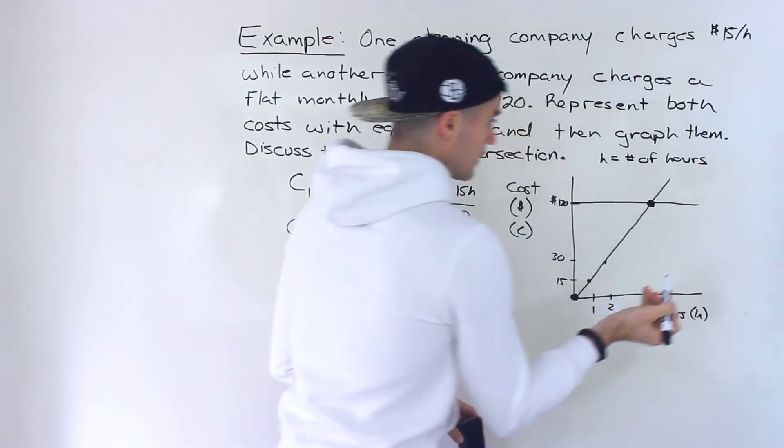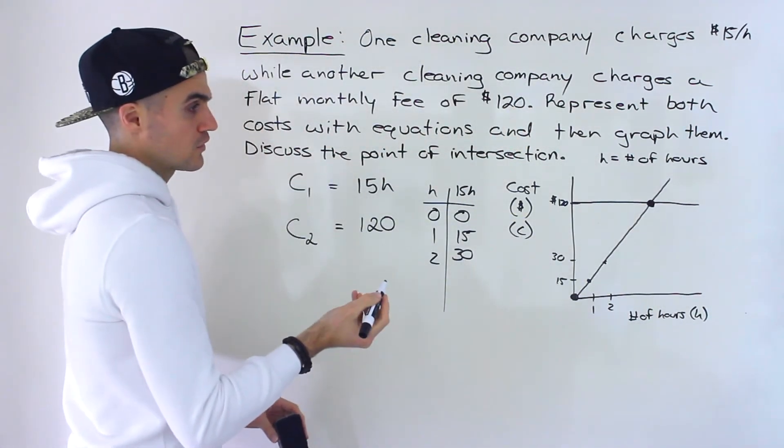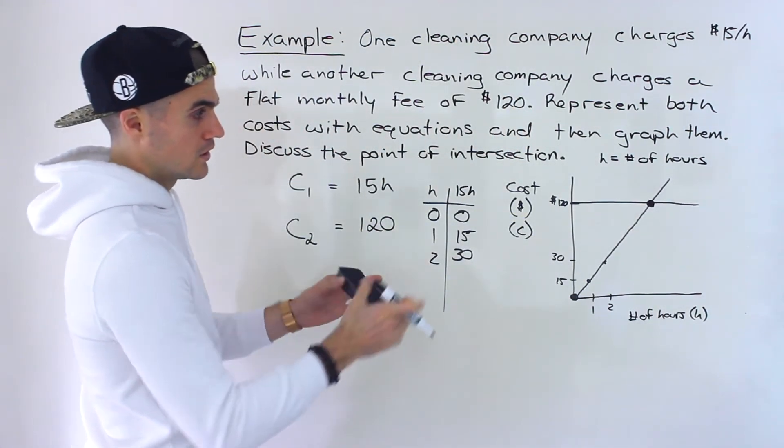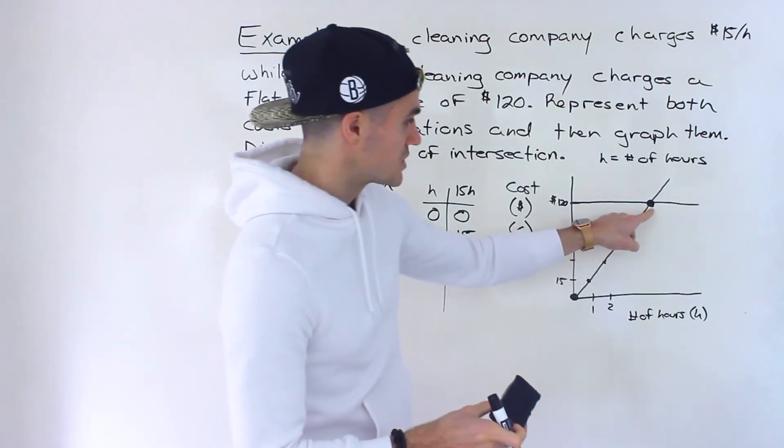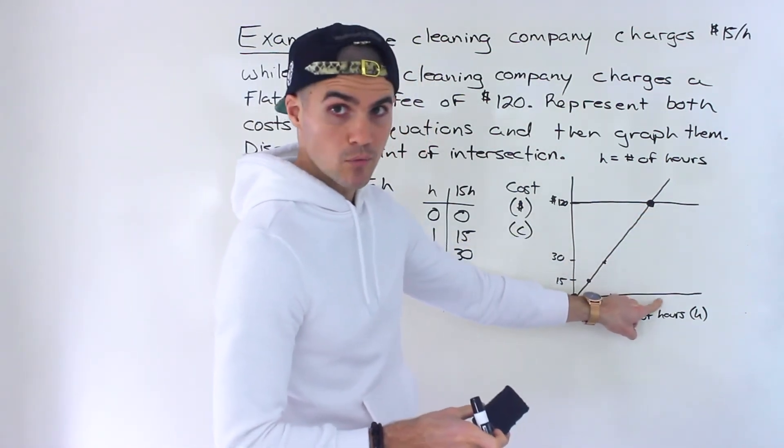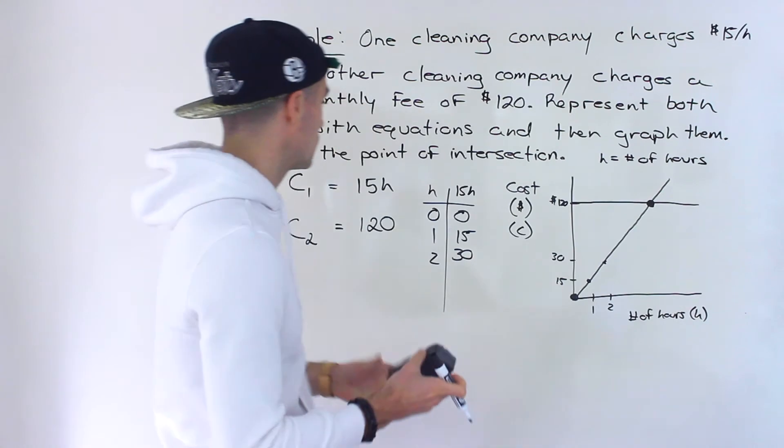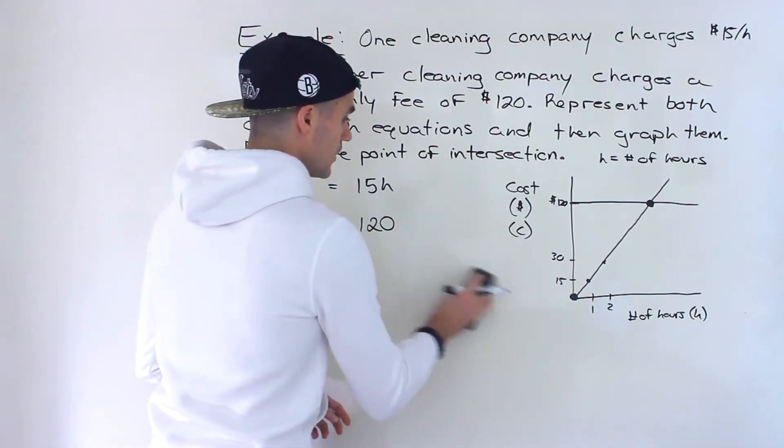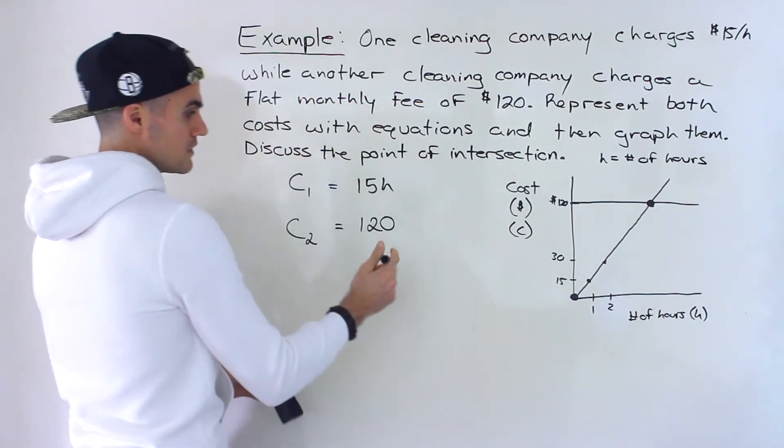First off, what's this point of intersection going to be? How can we figure that out? Well, on graph paper, you can just see at what number of hours it's going to be. If you wanted to do it algebraically, what you can do is just make both of these equal.